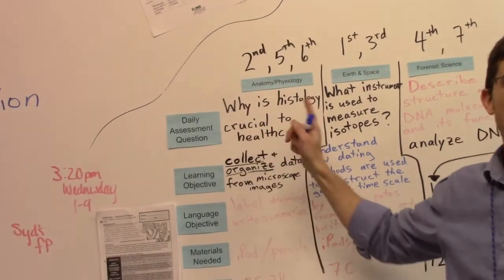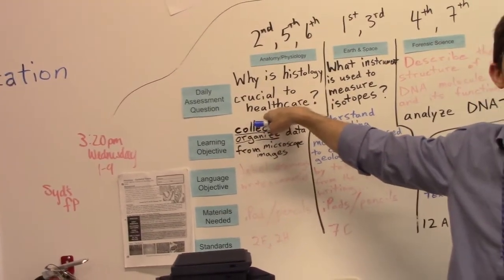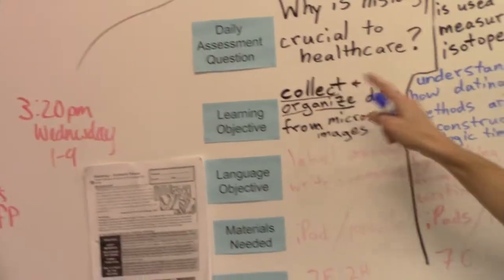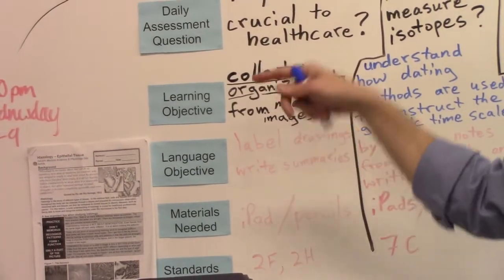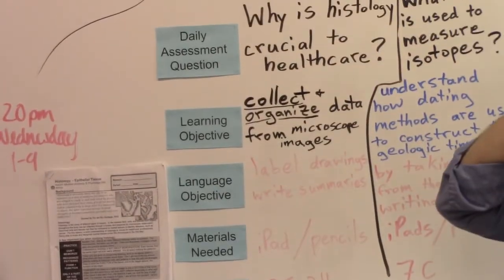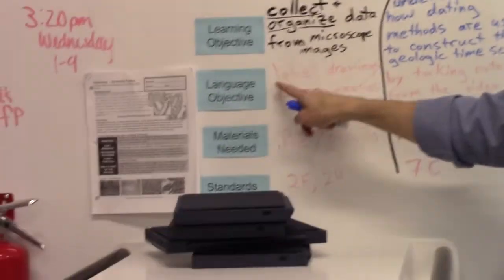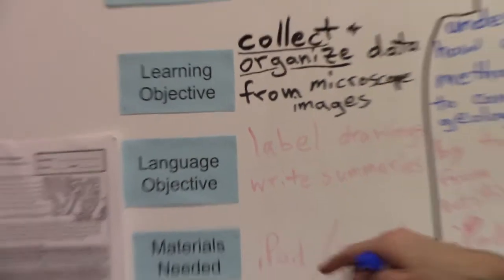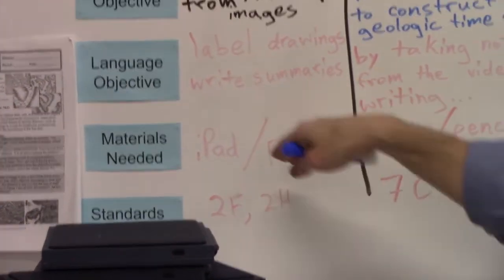Why is histology crucial to health care? This is the answer you're going to find before the end of class. Here's our learning objective: Collect and organize data from microscope images. There's more details on the slide for four points, whatever number and letter we're on. You're going to be labeling drawings and writing summaries. You're going to need an iPad per person and pencils to do the drawings.